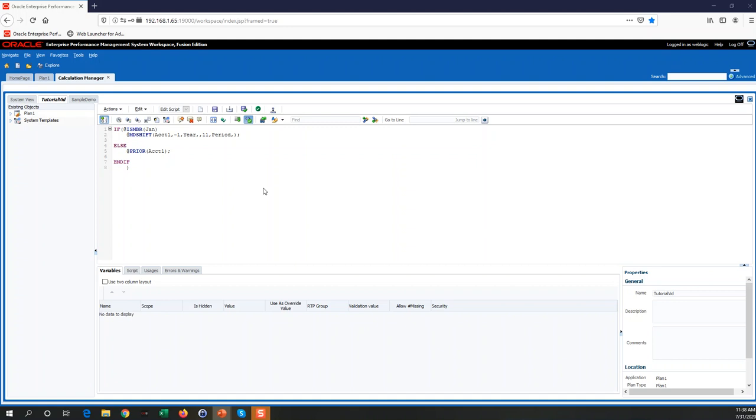If we had a scenario in which we would like to pull the labor expense from the prior month of a statement, we would use a code something like this.